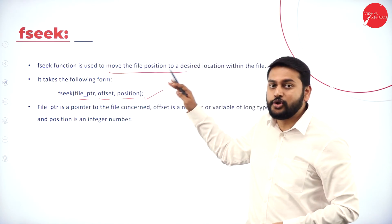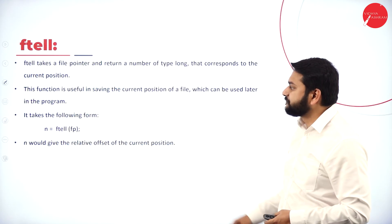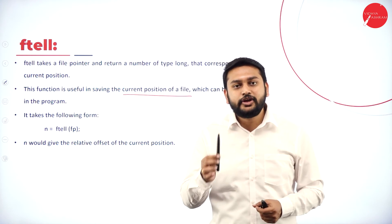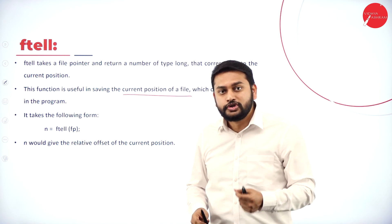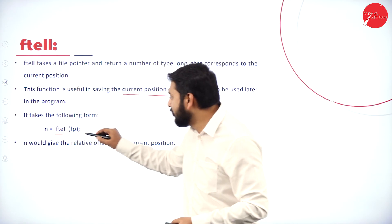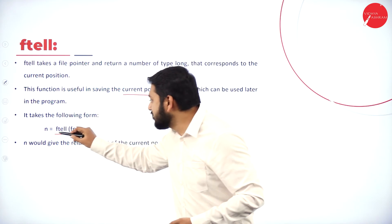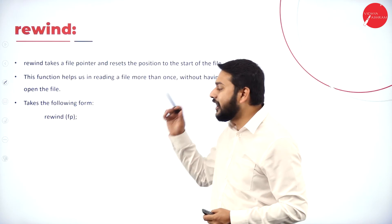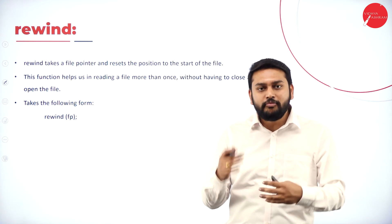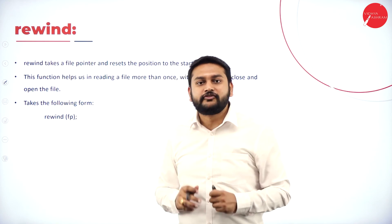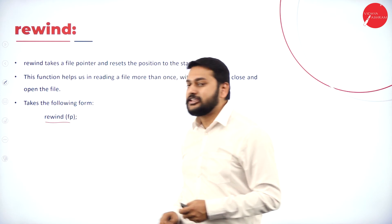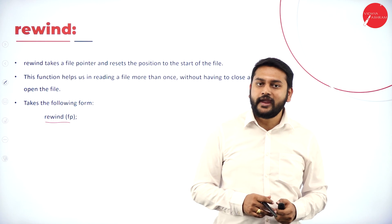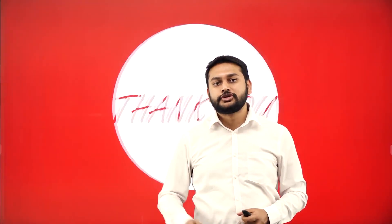The function ftell tells you the current position of the file pointer. By passing the file pointer to ftell, it returns the current location which is stored in a variable. The last function is rewind, which lets me read the content of a file multiple times without closing it — you just pass the file pointer. With that, we've covered the basic concepts of file handling in C. Thank you, bye bye.